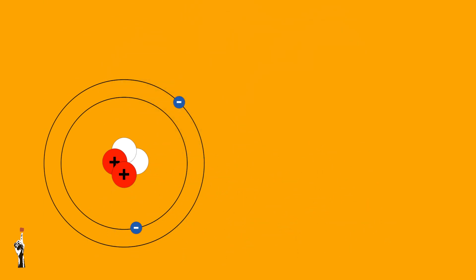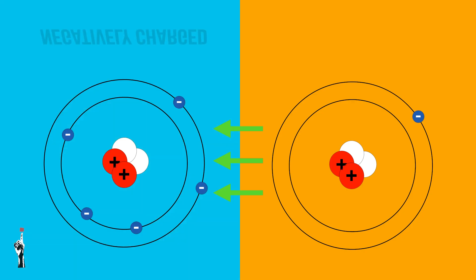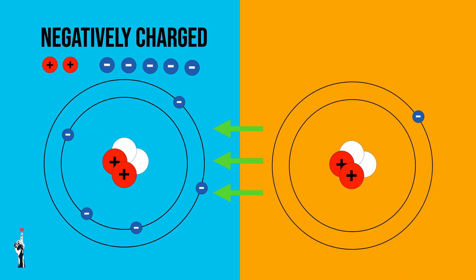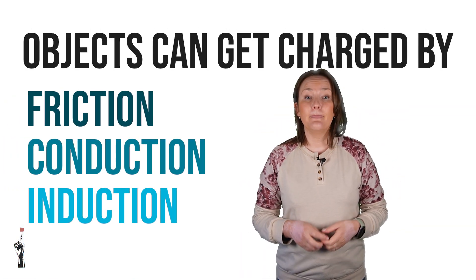Protons and neutrons always stay in an atom, but electrons can move from one atom to another. When electrons move from one object to another, that object becomes negatively charged. The object where the electrons moved away from will now be positively charged, since there are more protons after some of the electrons move to the other object.